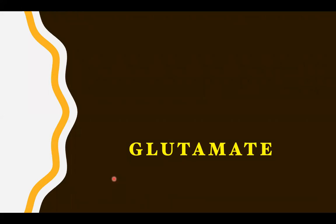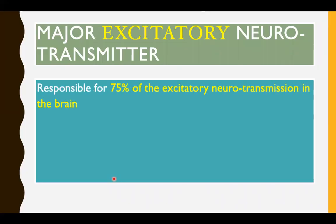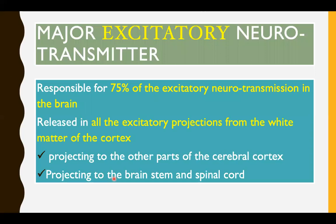Glutamate. We'll study glutamate with regard to its sites, receptors, and applied aspects. Glutamate is responsible for 75% of the excitatory neurotransmission in the brain — it is the most common excitatory neurotransmitter. It is released in all excitatory projections from the white matter of the cortex, projecting to other parts of the cerebral cortex, as well as to the brainstem and spinal cord.